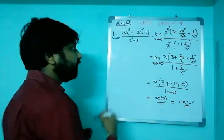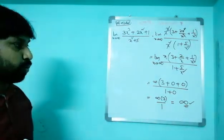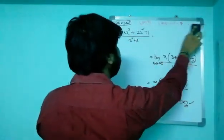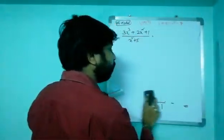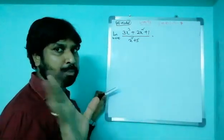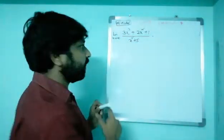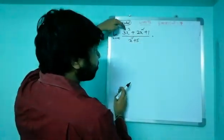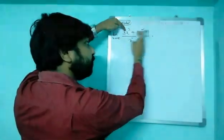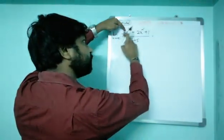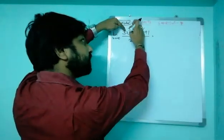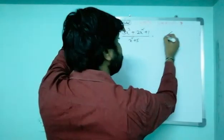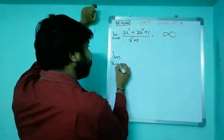Now I want to reveal the shortcut. It's very easy. First you have to recognize that the numerator power is more than the denominator power — if you identify that one point, the answer is directly infinity. Look carefully: the highest power in the numerator is x cube, the highest power in the denominator is x square. After cancellation, x is remaining in the numerator. If you substitute x as infinity, the answer is directly infinity.